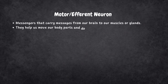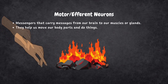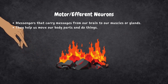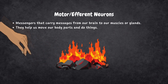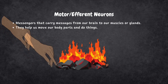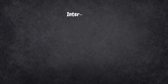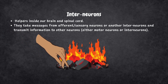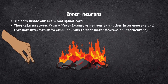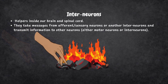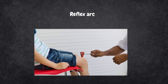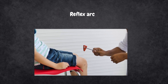The second type is motor neurons, also called efferent neurons. These are like messengers that carry messages from our brain to our muscles or glands, helping us move our body parts and do things. For instance, if you pick up a hot coal, motor neurons would innervate the muscles in your fingers, causing your hand to let go. The third type is interneurons — like the helpers inside our brain and spinal cord. They take messages from sensory neurons or other interneurons and transmit the information to other neurons, either motor neurons or interneurons. This helps us make sense of things and decide what to do. The knee-jerk reflex is a simple example — without even thinking, thanks to interneurons.